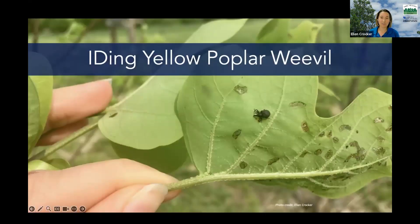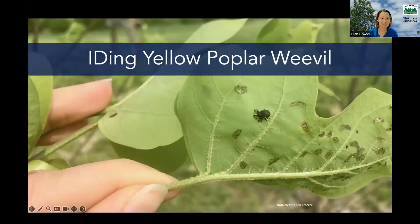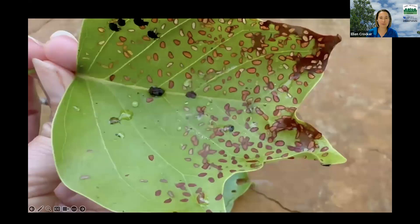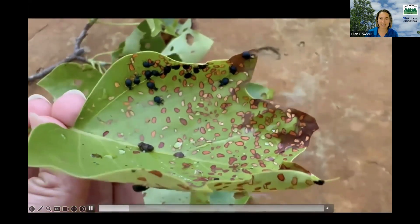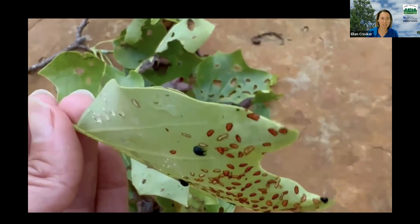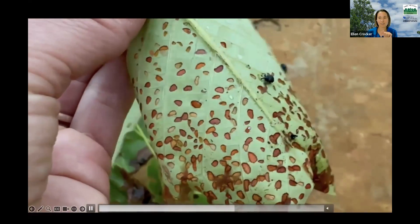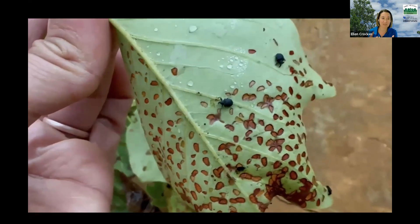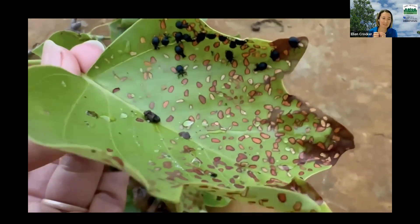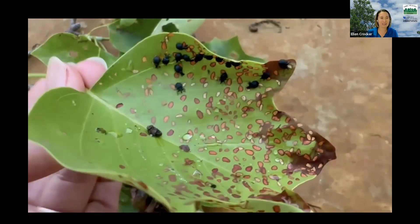For identifying yellow poplar weevil, seeing the weevil itself can be helpful — that large snout is pretty distinctive, though you might mix it up with a tick. However, they can be hard to see given how tall yellow poplars grow; you may not be able to spot the tiny weevils on leaves unless those leaves fall. What's easier to see are the rice-shaped feeding marks the adults make on the juicy green tissue — a light brown or tan color. Those brown spots are less transient than the weevils themselves.